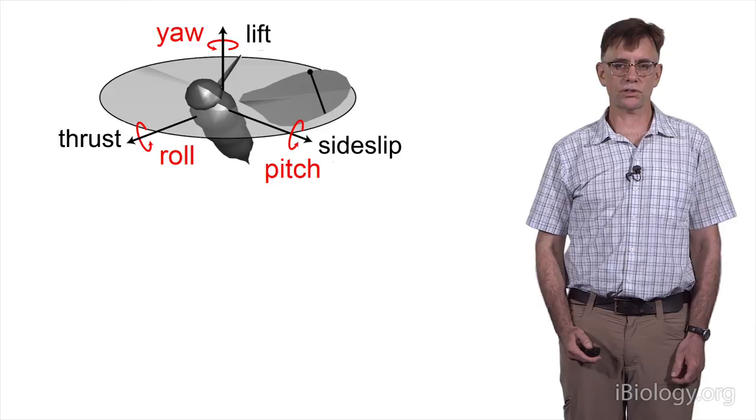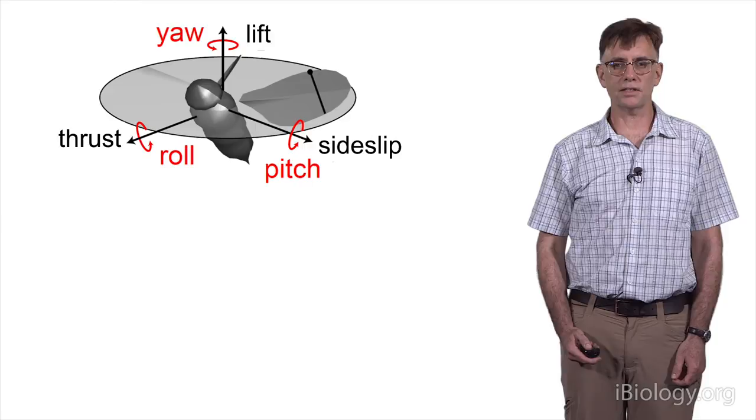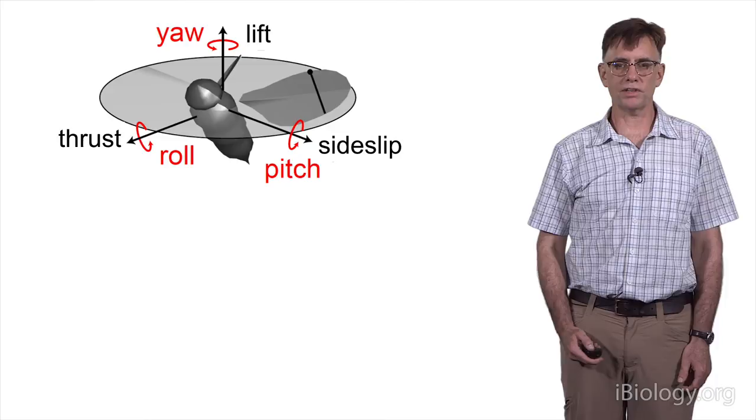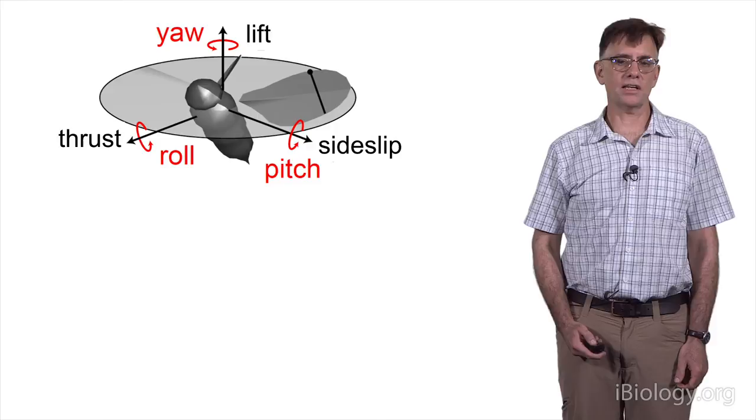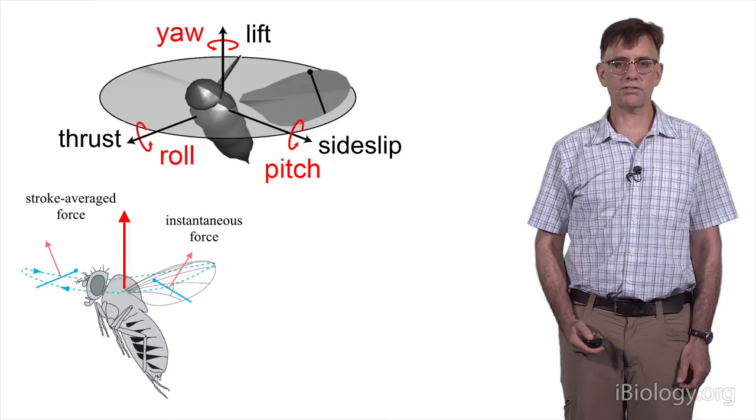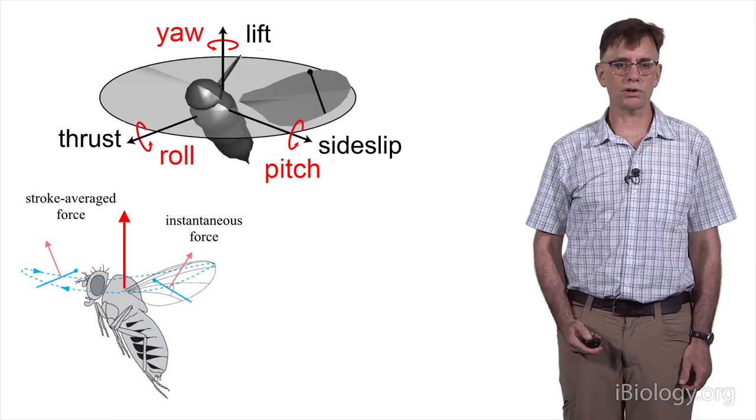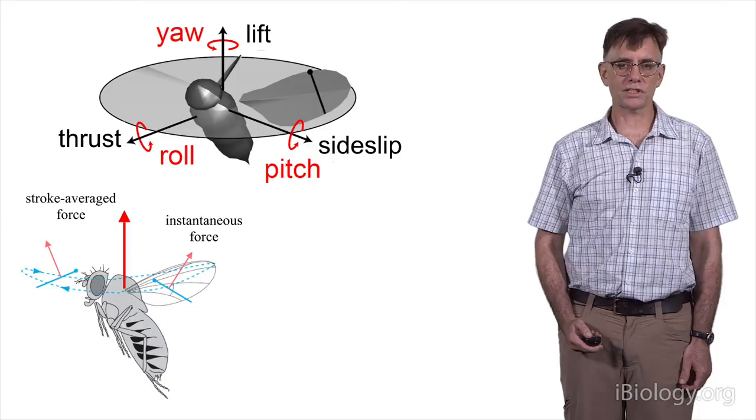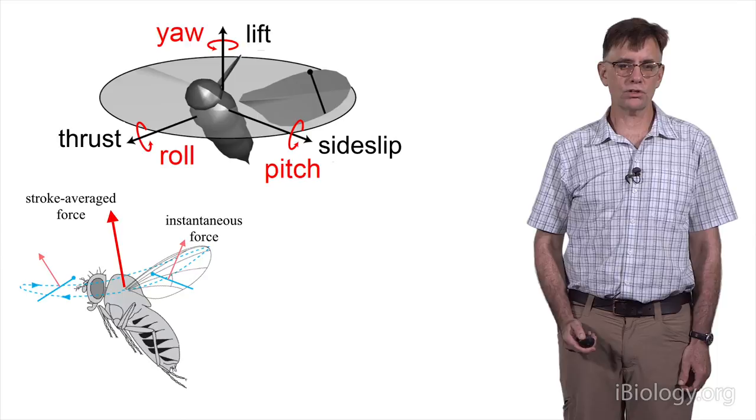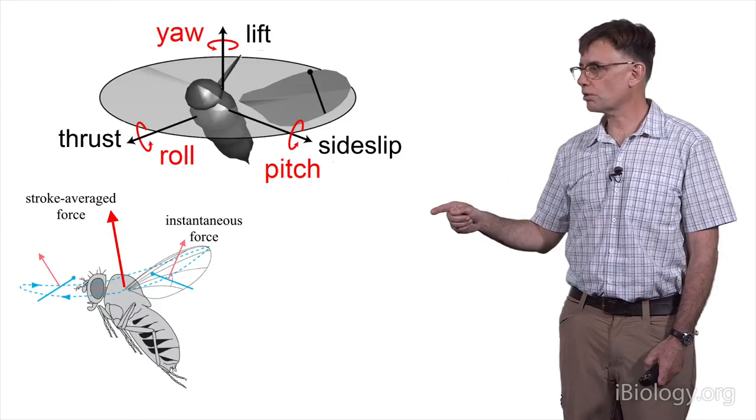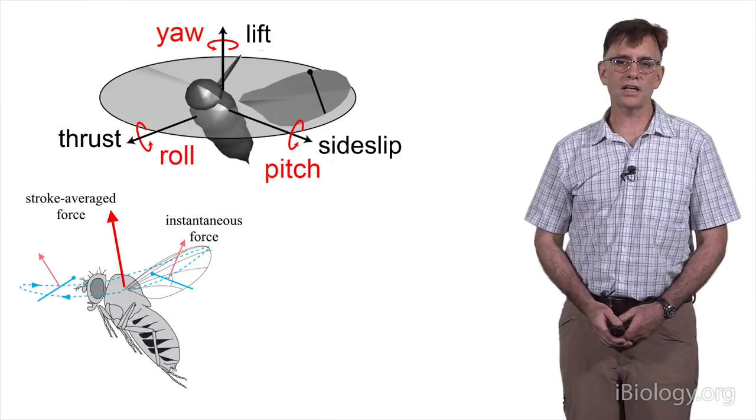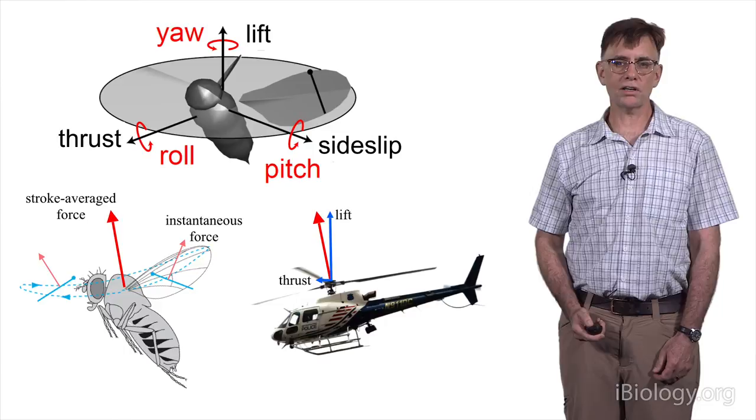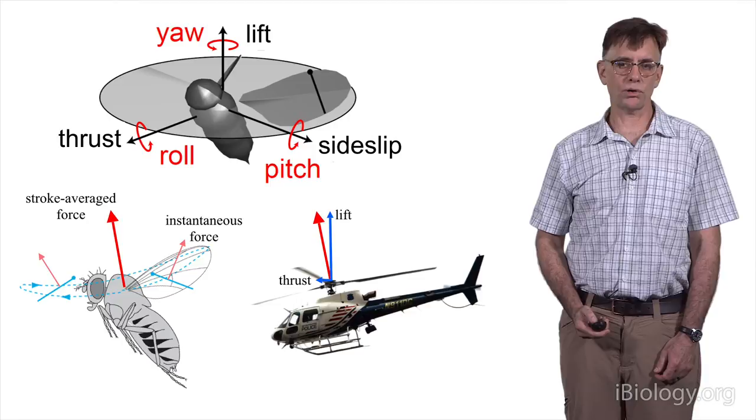Like any flying agent, insects have to control six degrees of freedom. That is, they have to control their rotations about the yaw, roll, and pitch axes, and they have to translate themselves, which we conveniently describe as thrust, side slip, and lift. The basic way that they do this is through tilting of their stroke plane. If you imagine a flapping insect, it's a little bit like a helicopter. Indeed, insects are a lot more like helicopters than they are like airplanes, and we should take this into account when we consider how they are controlling their flight.